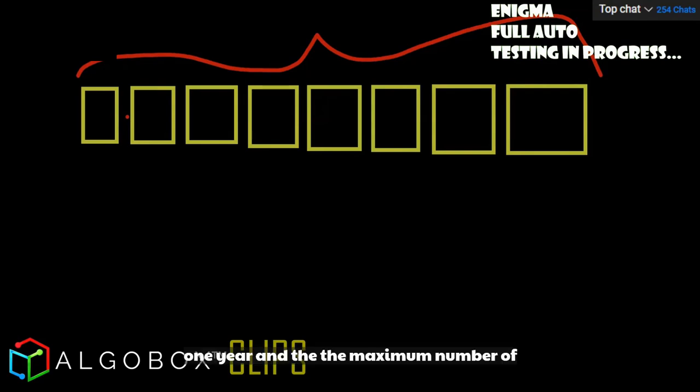One year, and the maximum number of trades you saw lost in a row was an eight scenario. Well, that's one year. You need to go back three, four, five years to find out what's the absolute max. Let's say that there was a nine somewhere in there - the system loses nine in a row.